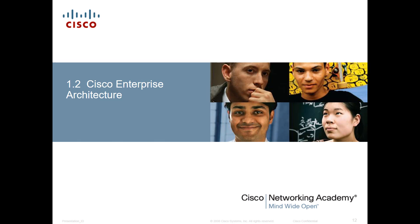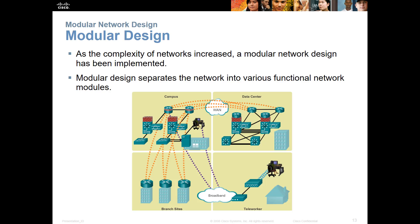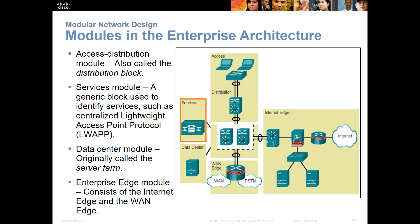Moving on to the enterprise architecture — it has to be modular and it has to be able to grow. As the complexity of our networks increases, so does the modularity. The ability to unplug and plug in other nodes, locations, or branches has to be there. That's why we have this new enterprise architecture, so that we can add and remove different components quickly.